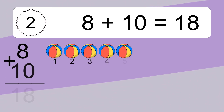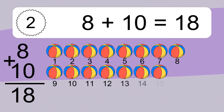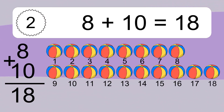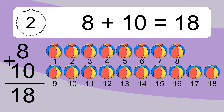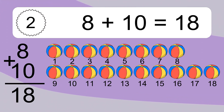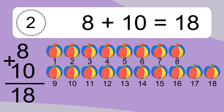8 plus 10 equals 18. Let's count it. 1, 2, 3, 4, 5, 6, 7, 8, 9, 10, 11, 12, 13, 14, 15, 16, 17, 18.